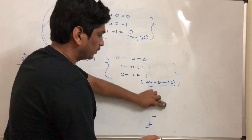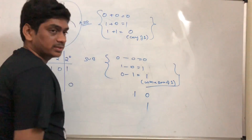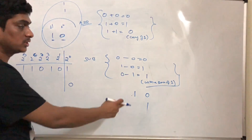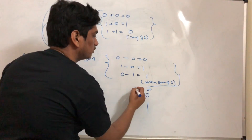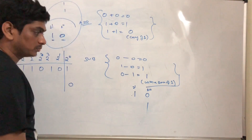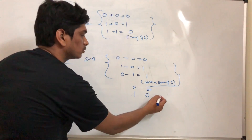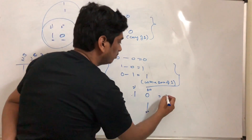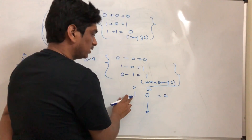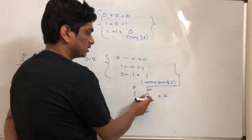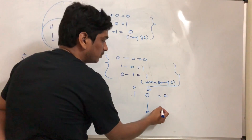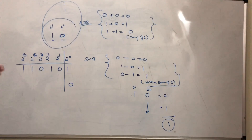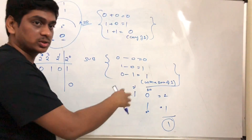Then 0 minus 0 is 0. Substituting the place values: 1 0 minus 1 — the 1 0 position is 2 power 1 (which is 2) and the 1 being subtracted is 2 power 0 (which is 1). So 2 minus 1 is 1, which confirms the result.